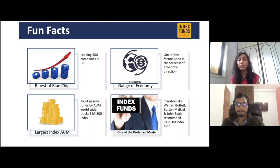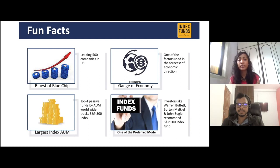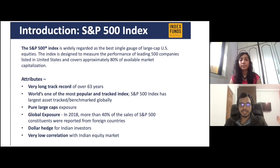The S&P 500 index and the economy go hand in hand — we gauge the economy's performance based on the S&P 500 index, because it contains the top 500 companies. If they are performing well, automatically the S&P 500 index will perform well, and vice versa. Also, the top four passive funds by AUM worldwide track the S&P 500, because a lot of people invest in it. It has been recommended by Warren Buffett and John Bogle, who are famous investors.